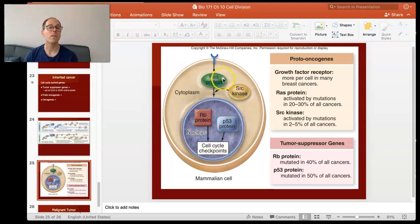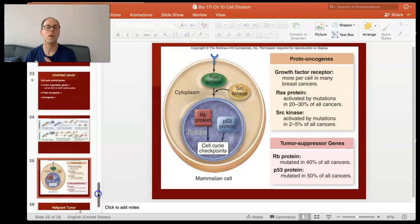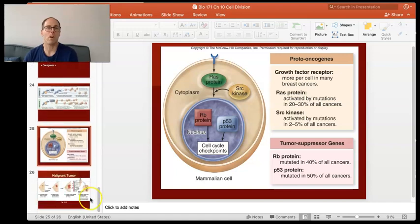And then you have these proto-oncogenes. I mentioned the RAS protein that comes from a proto-oncogene. So RAS activates cell division. RB protein and P53 protein, they suppress cell division. So you have on switches and off switches. So if you get mutations in these genes that code for these proteins, you may have problems controlling either turning off cell division or it may just keep on.